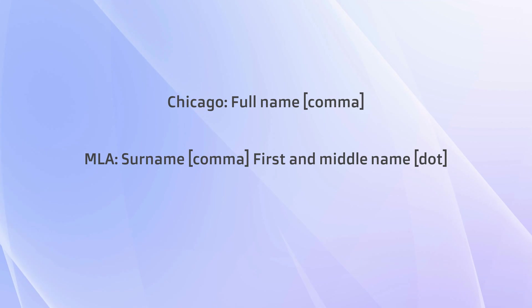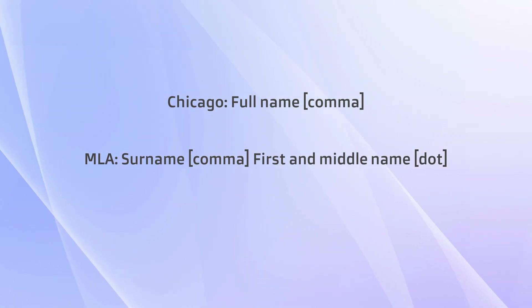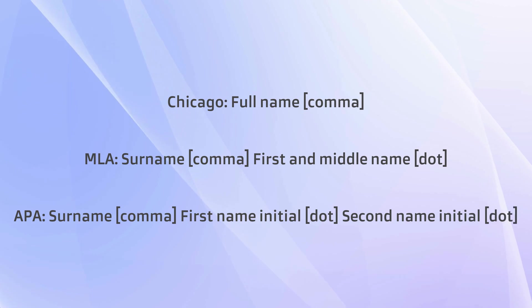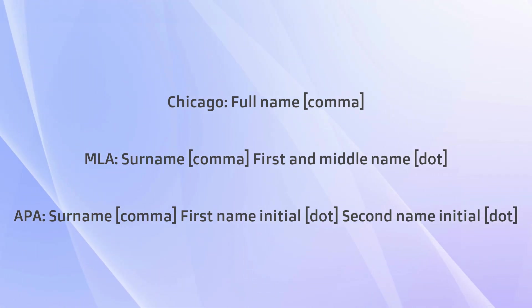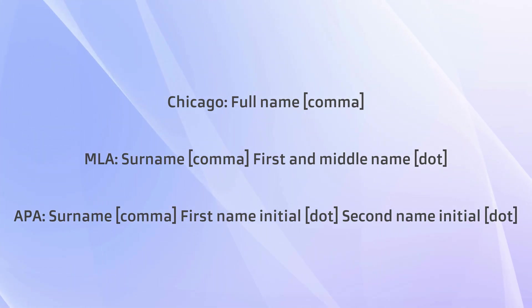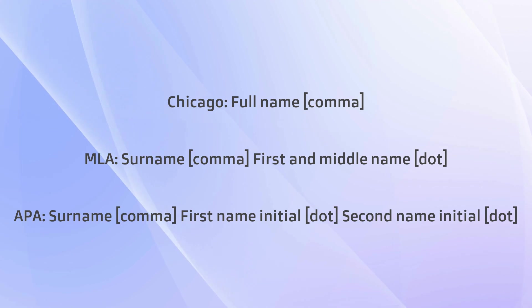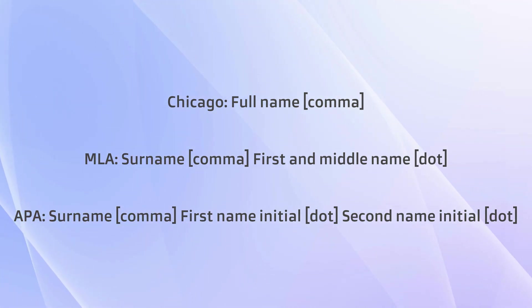There are a lot of different styles you can use for doing references. Three of the big ones are Chicago, where you write the full name followed by a comma; or MLA, where you put the surname, then a comma, then the first and middle name, then a dot; or APA, which we used throughout Australia — surname, comma, first name initial, dot, second name initial, dot. Really strict standards behind putting this in.